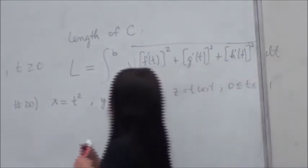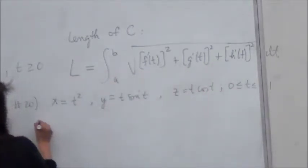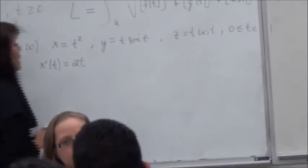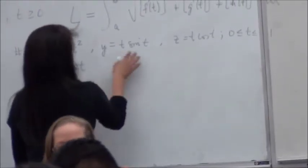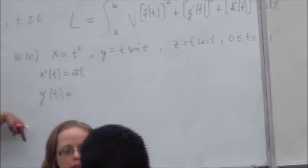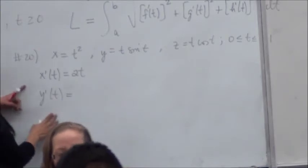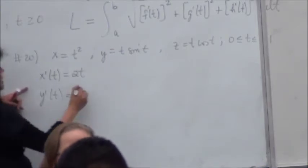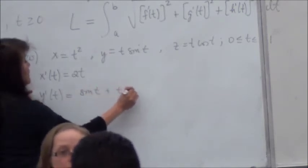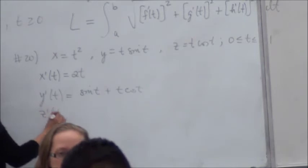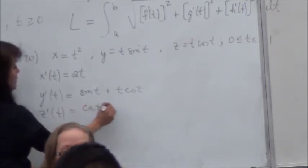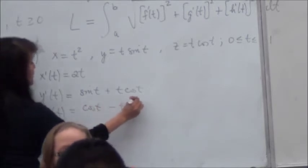So what do we do to find the length? We get the derivative of this with respect to T is 2T. Right? How do we differentiate Y? Y prime of T will be what? It's going to be the product rule, right? Correct? So it's going to be sine T plus what? T cosine T. And then you need to differentiate Z. You will get what? Cosine T minus T sine T. Correct?